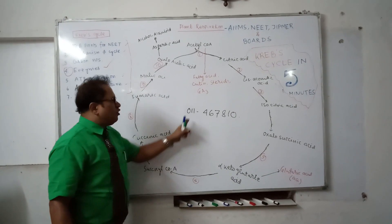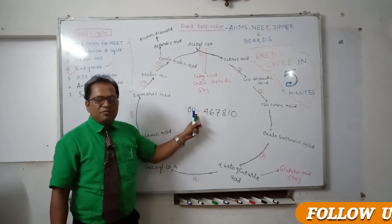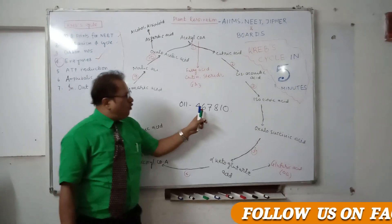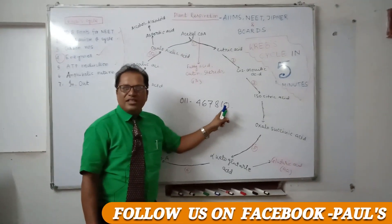What does that mean? 011 is Delhi's STD code, everybody knows that. Then the number continues: 4-6-7-8-1-0.